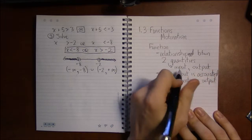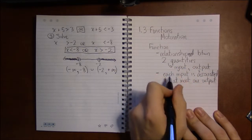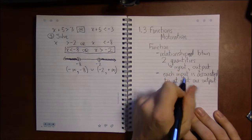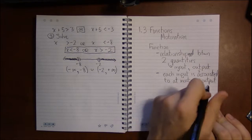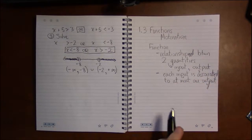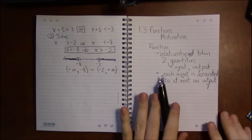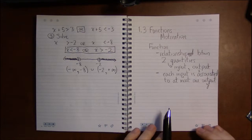So we'll think of inputs as X's and outputs as Y's, so this is saying that each X value is associated to at most one Y value. So that's rather abstract—what the hell do I mean by this?